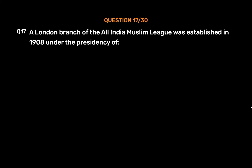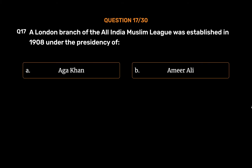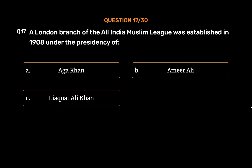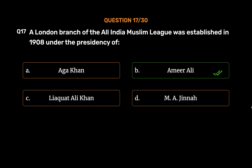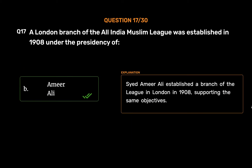Question No. 17. A London branch of the All-India Muslim League was established in 1908 under the presidency of: Option A: Aga Khan. Option B: Amir Ali. Option C: Liaquat Ali Khan. Option D: M.A. Jinnah. The correct answer is Option B: Amir Ali. Sayyad Amir Ali established a branch of the League in London in 1908, supporting the same objectives.